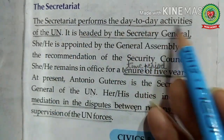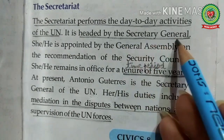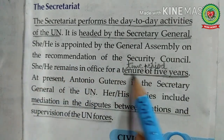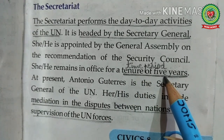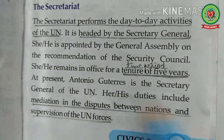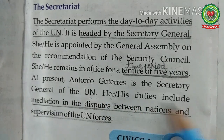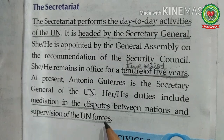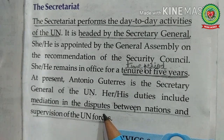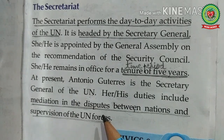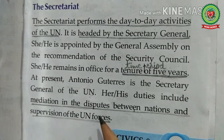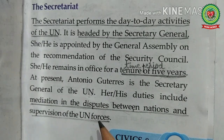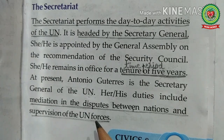Now let us read the Secretariat from the book. The Secretariat performs the day-to-day activities of the UN and is headed by the Secretary General. The Secretary General is appointed by the General Assembly on the recommendation of the Security Council, and remains in office for a tenure of five years. At present, António Guterres is the Secretary General of the UN. His duties include mediation in disputes between nations and supervision of UN forces. António Guterres became Secretary General in 2017; before that he served as Prime Minister of Portugal from 1995 to 2002, and as UN High Commissioner for Refugees from June 2005 to December 2015.